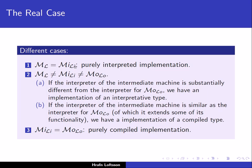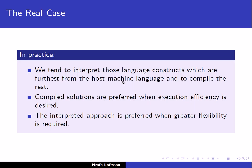It is important to understand that there exist purely interpreted implementations, purely compiled implementations, and combinations of those — one of the best known being Java. In practice, we tend to interpret those language constructs which are furthest from the host machine language, and to compile the rest.